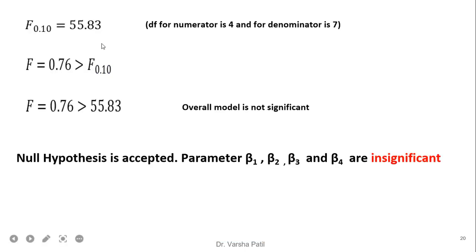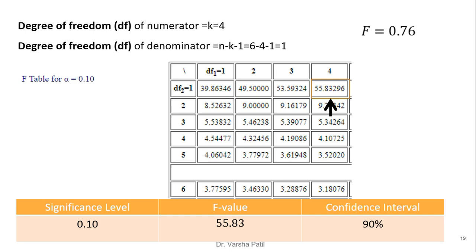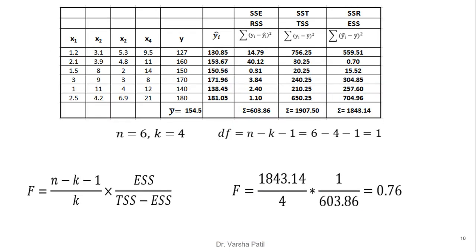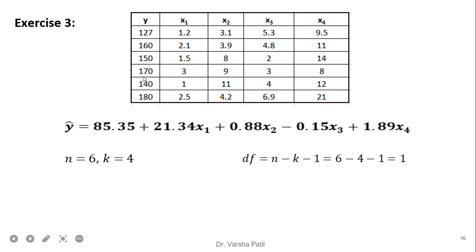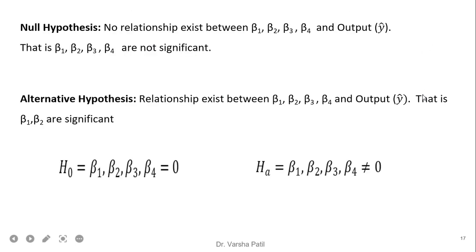Even checking at 0.20 or 0.30, we cannot accept this answer at 90 percent confidence. So we accept the null hypothesis — variables are not significant, the overall model is not significant, and parameters b1 to b4 are insignificant. This shows that when there are more independent variables, the number of records should also be more to have sufficient degrees of freedom for a robust regression model.